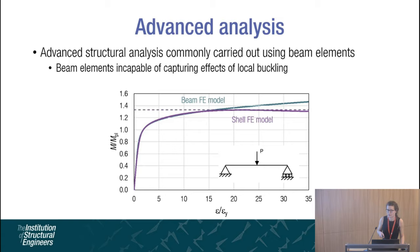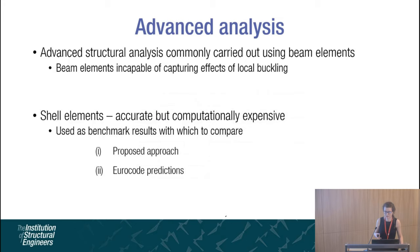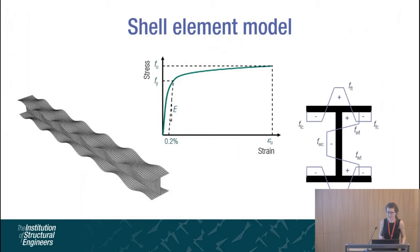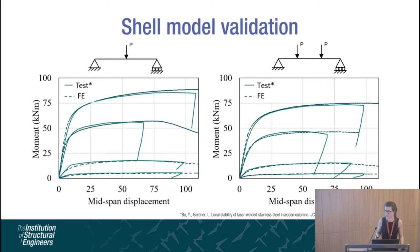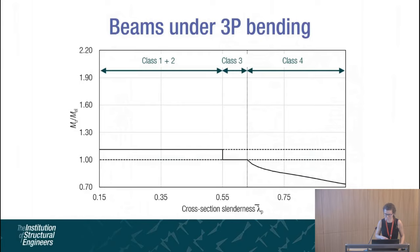The beam FE model, which does not consider local buckling, keeps deforming under increasing load. If we now consider the shell FE model, we can see that this — which does capture local buckling — fails at a peak moment capacity. Shell elements are accurate in capturing all cross-sectional behaviour; however, they are computationally expensive. They will now be used as benchmark results with which to compare the accuracy of both the proposed approach and the current Eurocode predictions. The shell element models include geometric imperfections as well as material non-linearity through the Ramberg-Osgood material model and residual stresses. It is important to first validate our shell models against test data so that we know they accurately capture local and global behaviour, and with these validated shell models we can then generate benchmark results.